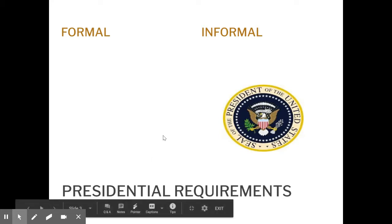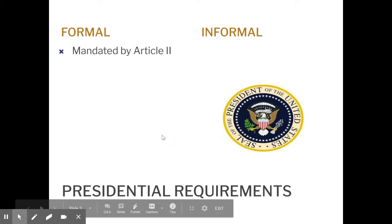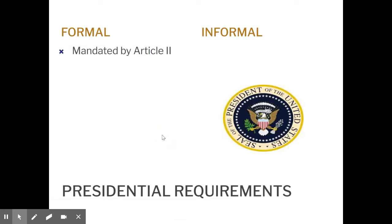The formal requirements to be president of the United States are specified in Article 2 and they're absolutes. The minimum age is 35, so you have to be at least 35 years of age. The average age of American presidents when elected is about mid-50s. The last two presidential elections saw Trump originally as the oldest elected president in American history, and then Joe Biden as the new oldest elected president.